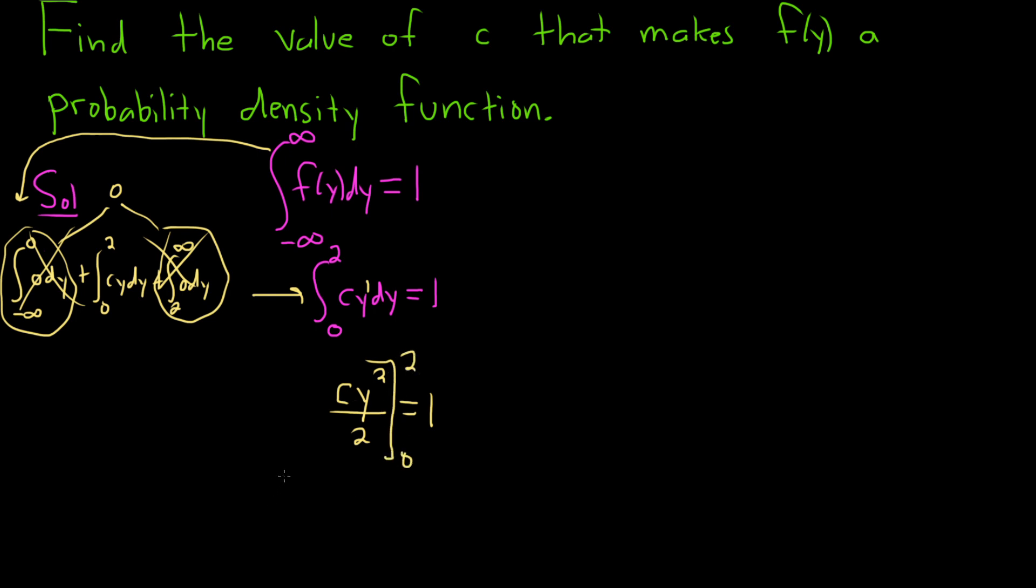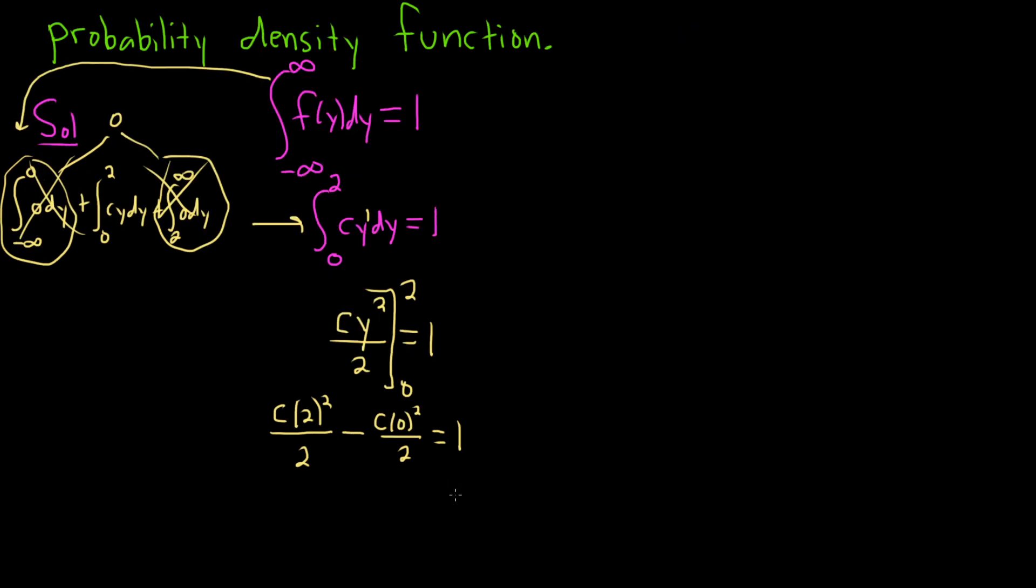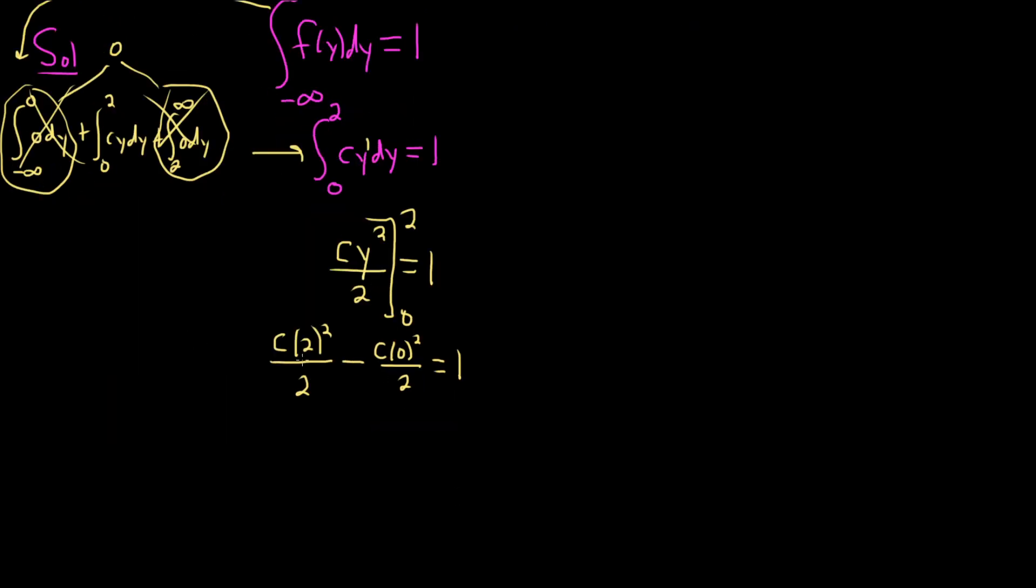Plug in two first. We'll get c times two squared over two. Then we subtract and plug in zero: c times zero squared over two. Two squared is four, so this will be four over two. We get two c minus, and then this piece here is zero. That's equal to one.